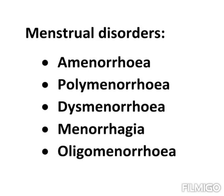So we learned 5 types of menstrual disorders. First is amenorrhea — the absence of menstruation. Polymenorrhea — the menstrual cycle is shorter than 21 days, so there will be more menstruations in a year. Third is dysmenorrhea — pain associated with menstruation. Fourth is menorrhagia — heavy and prolonged menstrual period that disrupts a woman's normal activities. Fifth is oligomenorrhea — infrequent menstrual periods where a woman regularly goes more than 35 days without menstruation.